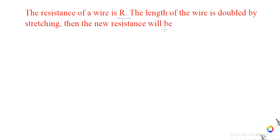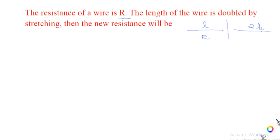For this, first we have to see what is given. There is a wire. Its resistance is R. Let us assume the length is L. Now by stretching, the length of the wire is increased to 2L — that means it is doubled. Now, what will be the resistance? Let us assume the new resistance is R dash. We have to calculate.